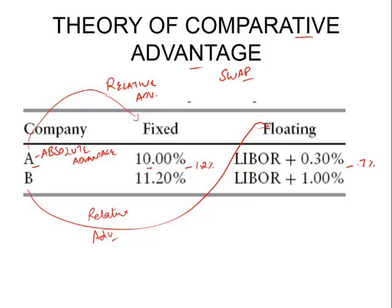Theory says A should borrow at the fixed rate even if it wants floating, and B should borrow at the floating rate even if it wants fixed, and then they swap. A gives B the fixed-rate loan proceeds and takes the floating from B. Both counterparties will be better off, as we will prove shortly.